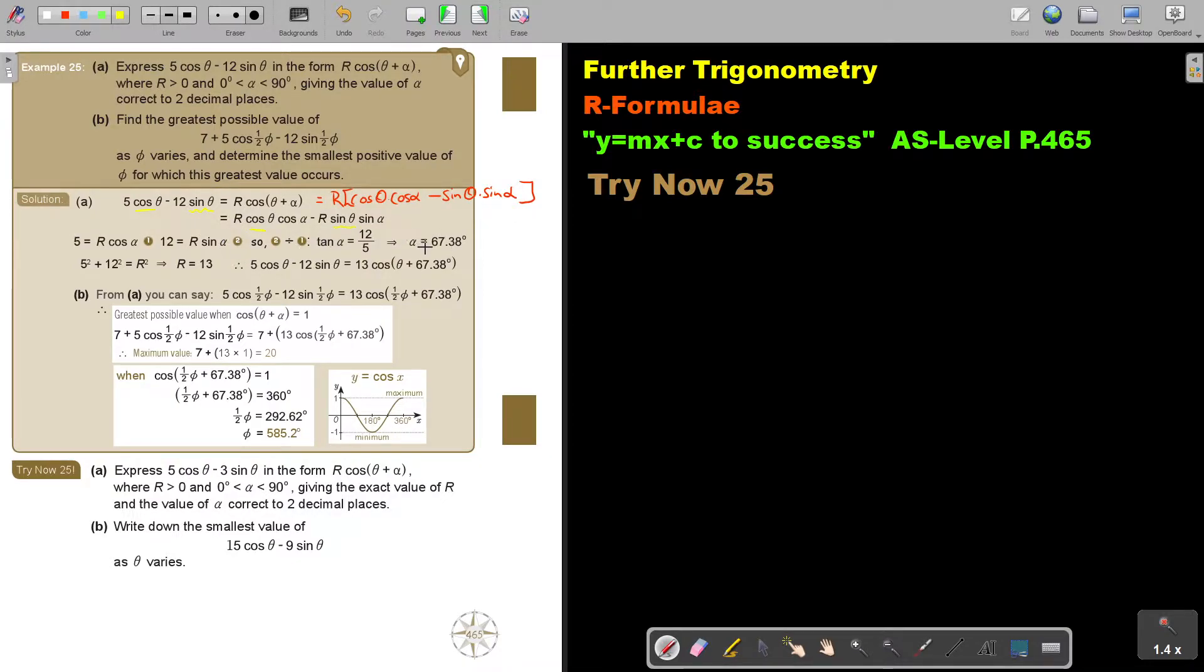If I divide, I get my angle, 2 divided by 1, so the acute angle is 67.38. Then I get my value of R, I square the first equation, square the second one, and then take the square root and I take the positive one and that's 13.